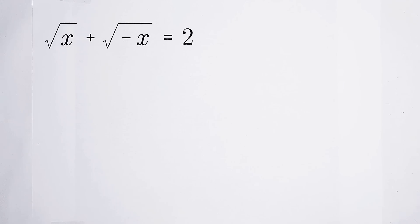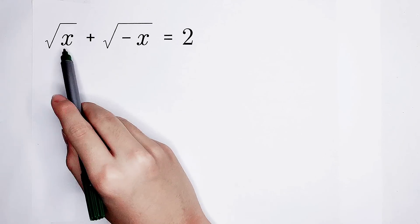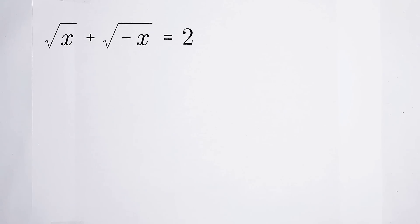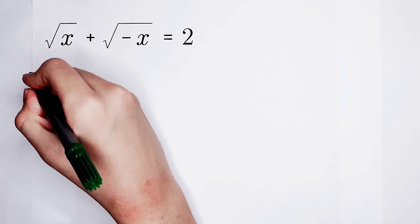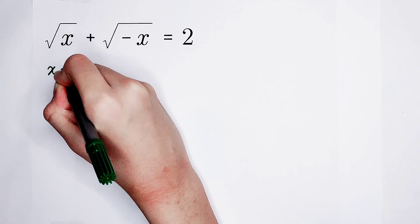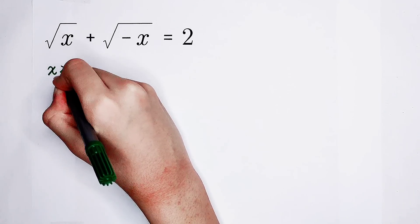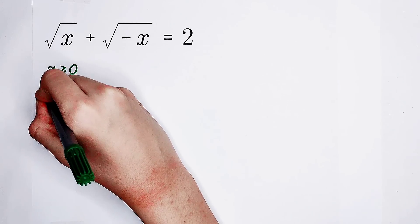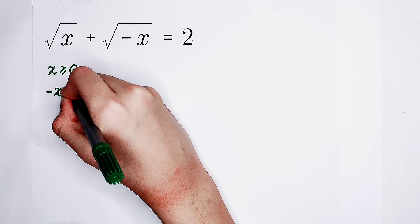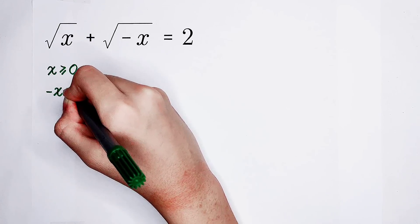Strange, isn't it? Now, what should we do? Of course, we all know that the numbers under the square roots are always non-negative. That means x is non-negative — x is always greater than or equal to 0. The same rule applies to negative x, because it is also under the square root. It is also non-negative.